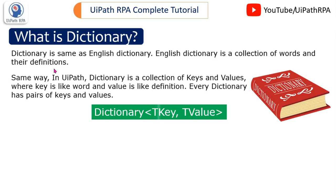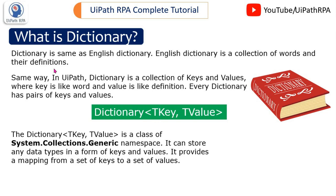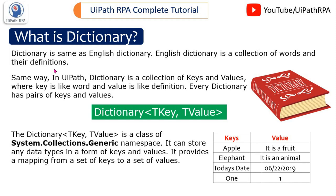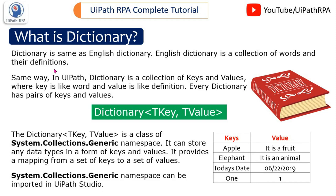The dictionary TKey and TValue is a class of system.collections.generic namespace. It can store any data types in a form of keys and values. It provides a mapping from a set of keys to a set of values. For example, key apple has value 'it is a fruit', key elephant has value 'it is an animal'. Here the keys include strings, today's date, and integers, mapped to their respective values.